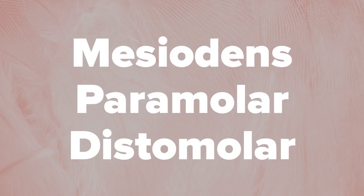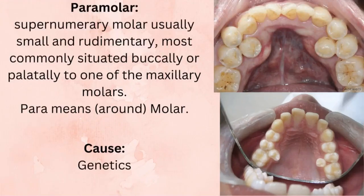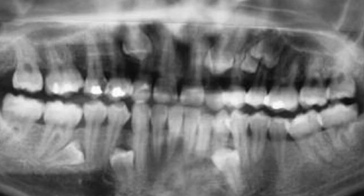We have three different types of supernumerary teeth: paramolar, mesiodens, and distomolar. Paramolar is a supernumerary molar that is usually small and rudimentary, most commonly situated either buccal or palatal to one of the maxillary molars. As the name suggests, 'para' means around, so it is around the molar. The cause is genetics.